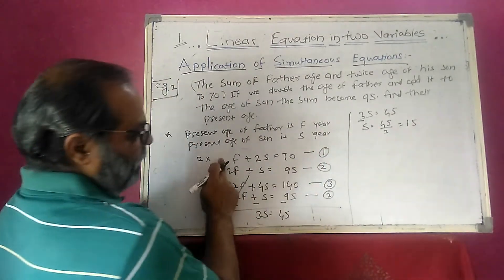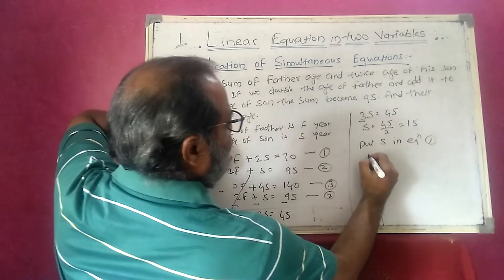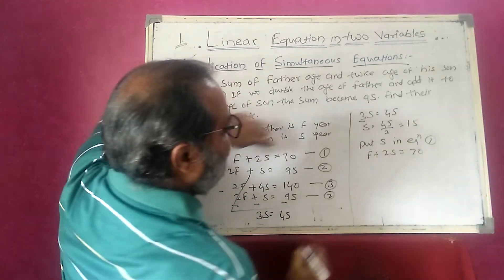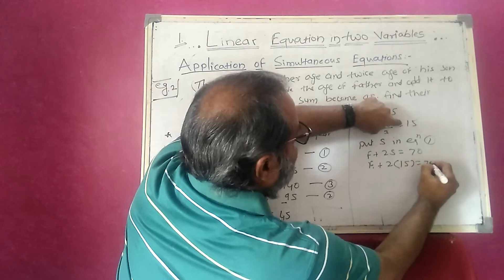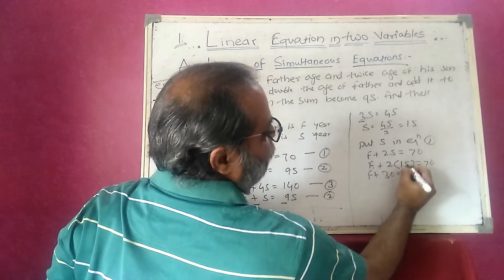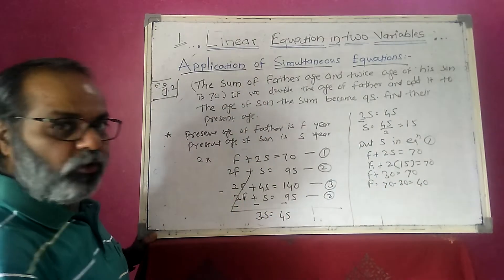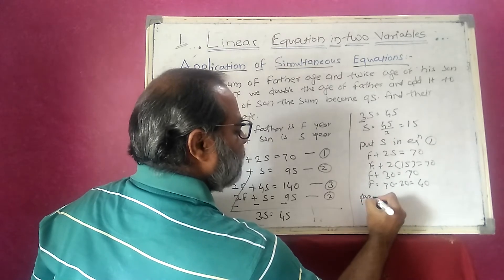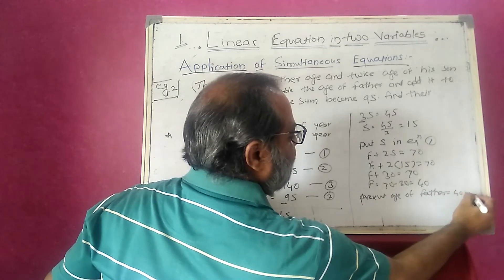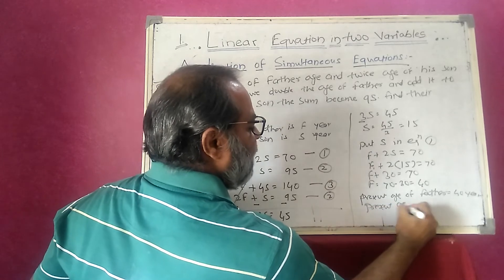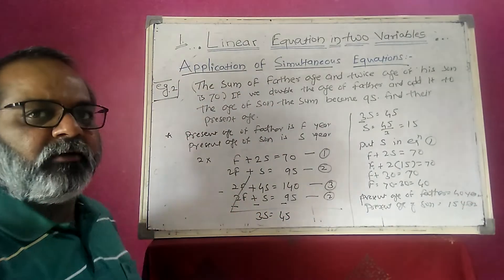I substitute s equals 15 into equation 1: f plus 2s equals 70. So f plus 2 times 15 equals 70, giving f plus 30 equals 70, therefore f equals 70 minus 30, which is 40. So the present age of father is 40 years and the present age of son is 15 years.